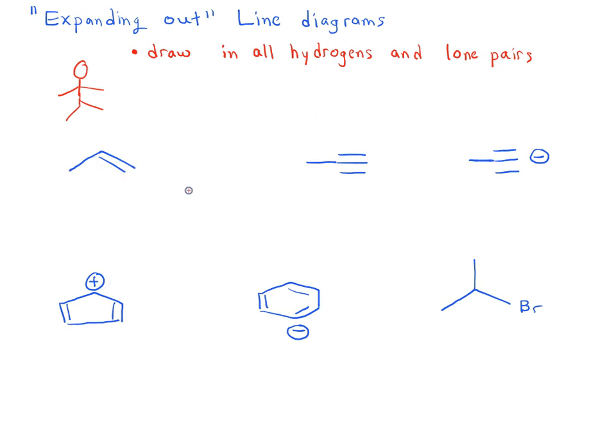The line diagram is exactly the same way. In a line diagram, even though we've omitted drawing in the hydrogens and the lone pairs, we don't mean to say that they're not there. This is important because these hidden hydrogens and hidden lone pairs can come up to a great extent in different chemical reactions — it's really important to know that they're there because they can be used in chemical reactions.